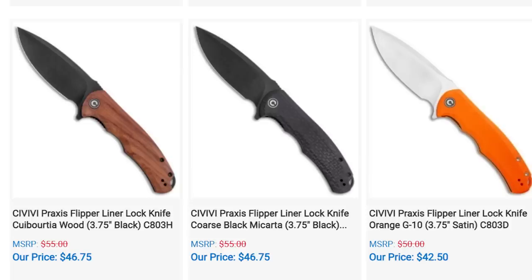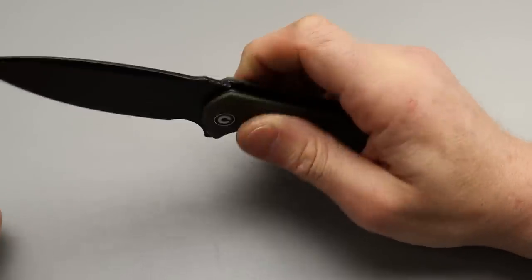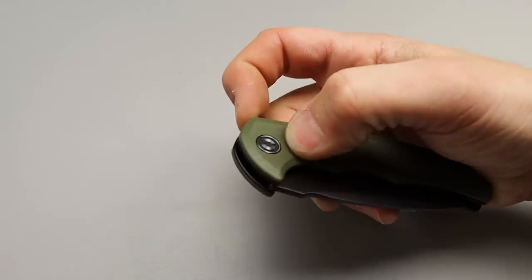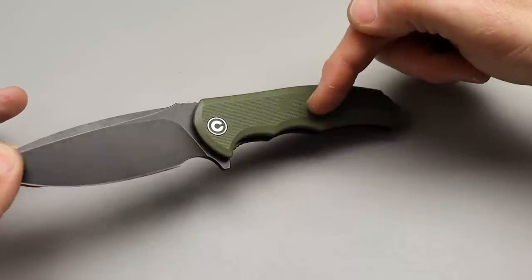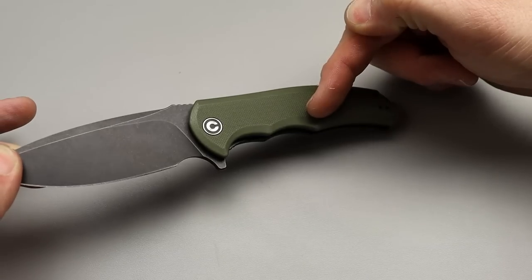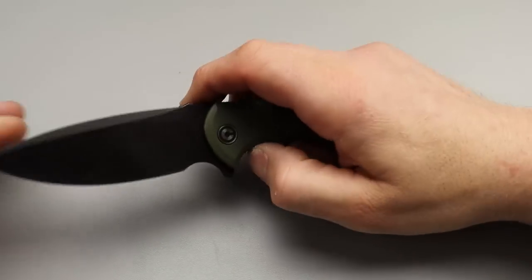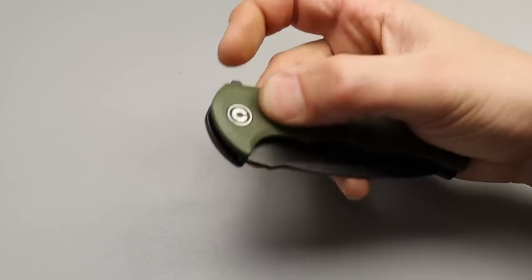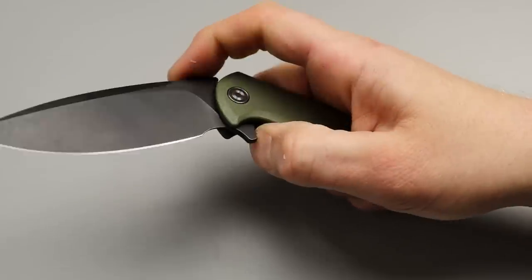Next really quick, we have the Civivi Praxis. One of my favorite budget knives of all time. This thing is absolutely amazing. Full size knife, 9CR18MOV. Now they are coming out with a new version of this with wood scales and then micarta. So I really wish they would have did 14C, but I should have one of those here pretty soon. Can't wait to check that out. The action and detent on these are just perfection.